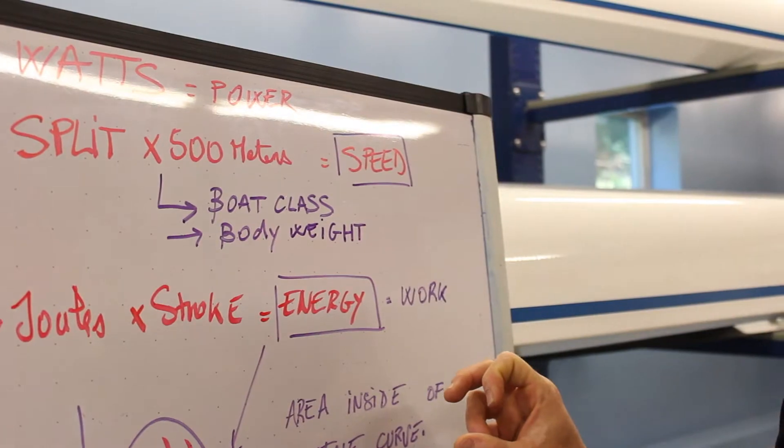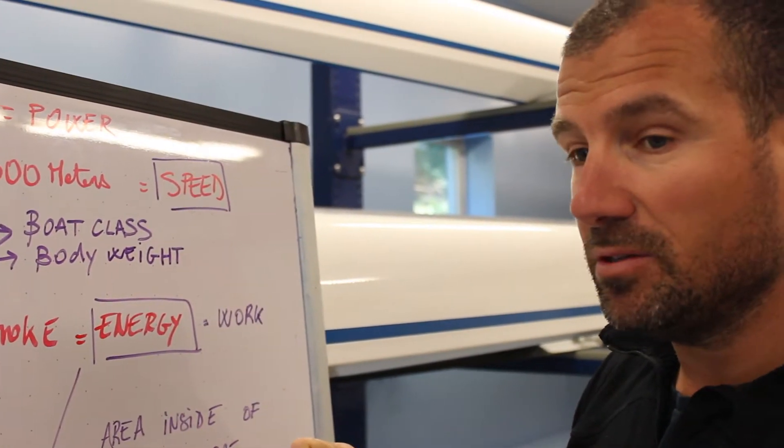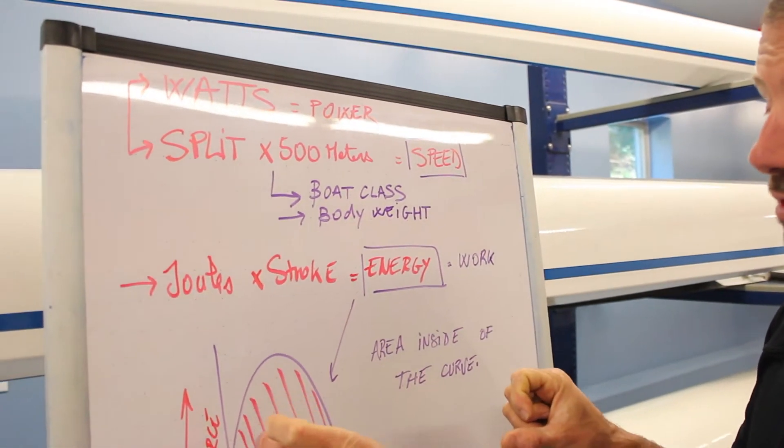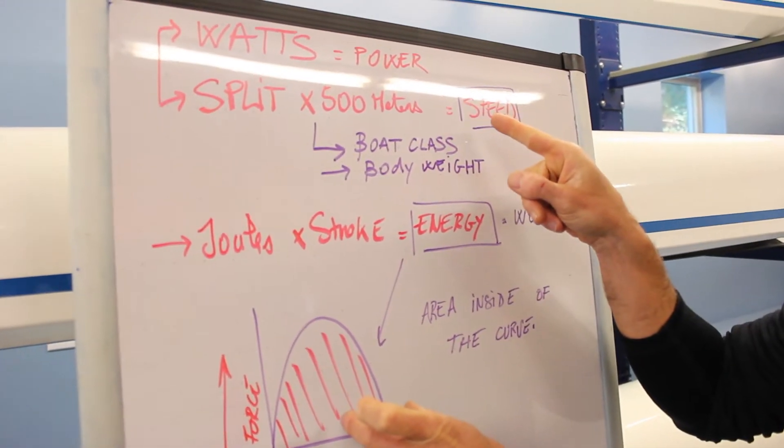So if the frequency of how many power curves we do in a minute, or the length of the power curve, or the peak force of the power curves, the area changes, that split is going to change.